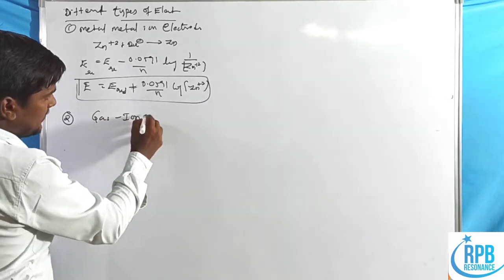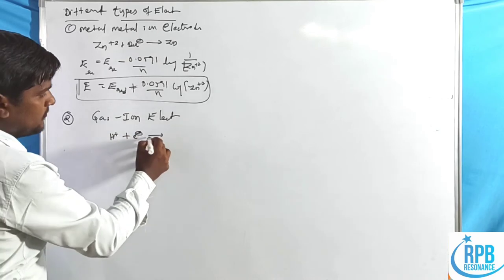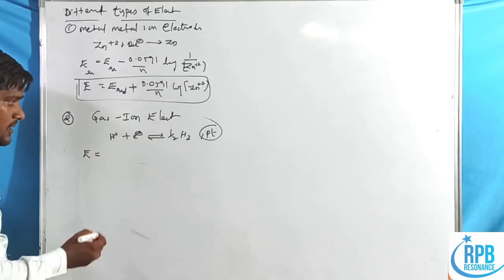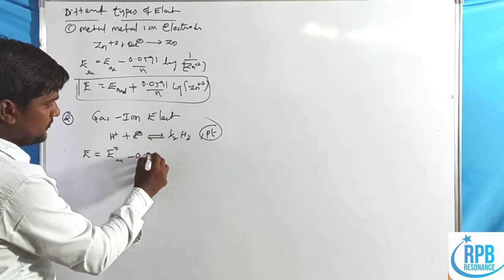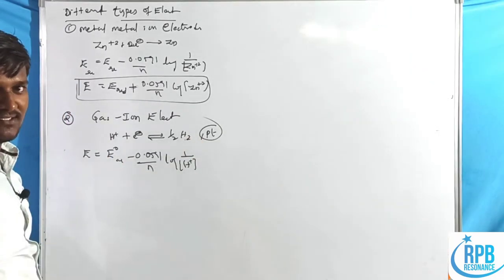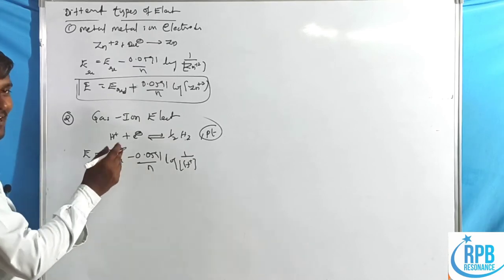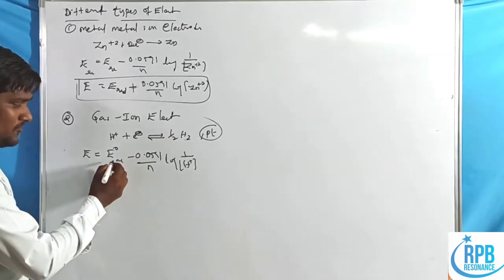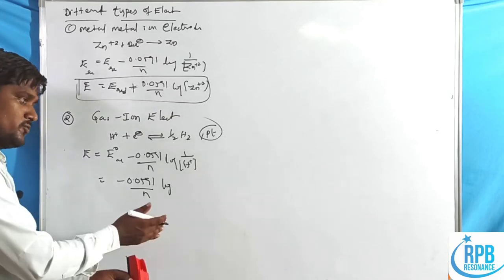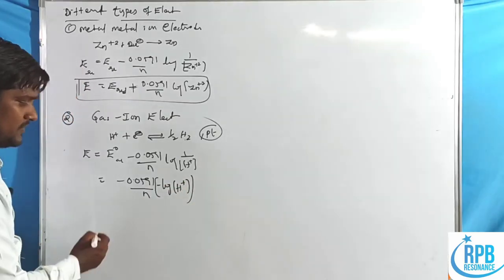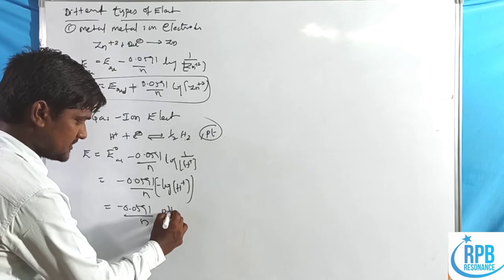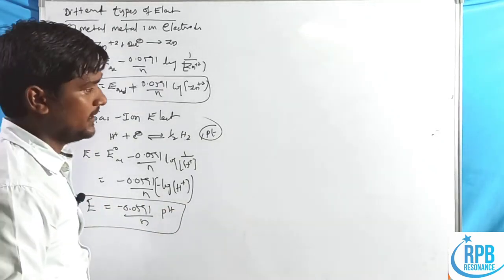Second, the gas-ion electrode: H⁺ + e⁻ → ½H₂ (on platinum electrode). Applying the Nernst equation with E°_SHE = 0: E = −(0.0591/n)·log(1/[H⁺]). Since the log of 1/[H⁺] equals −log[H⁺] = pH, the electrode potential is related directly to pH.